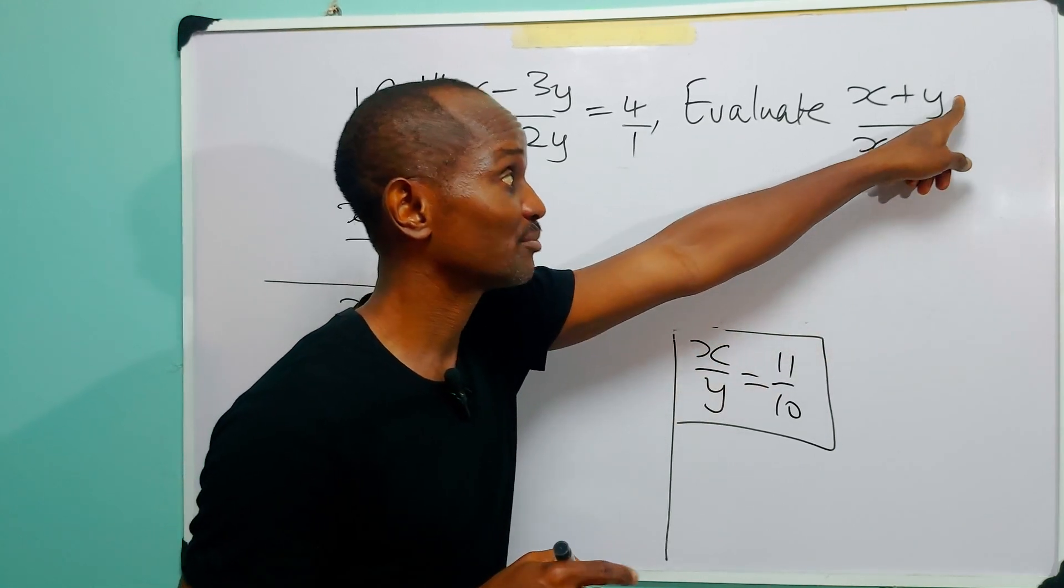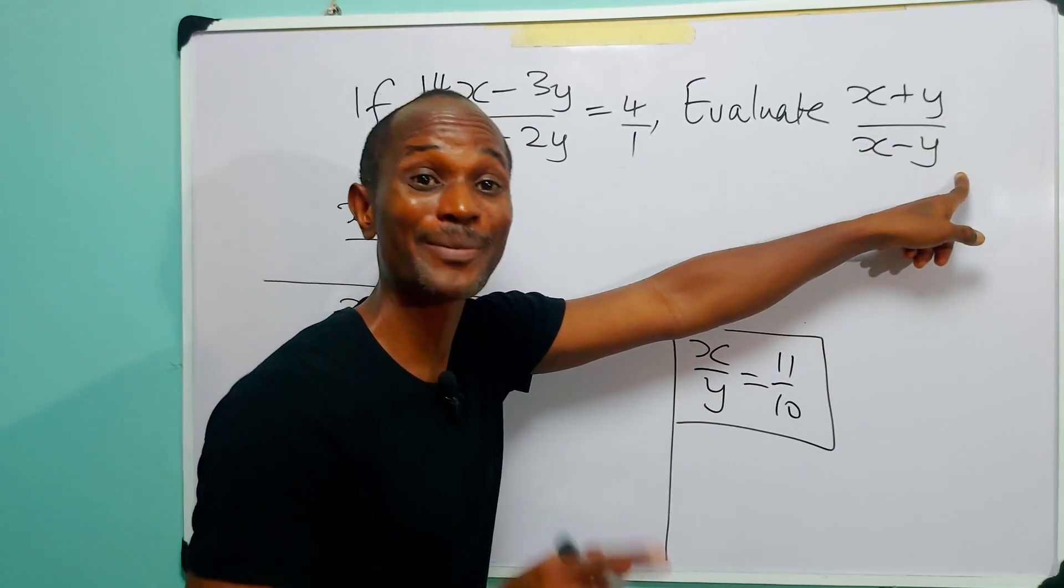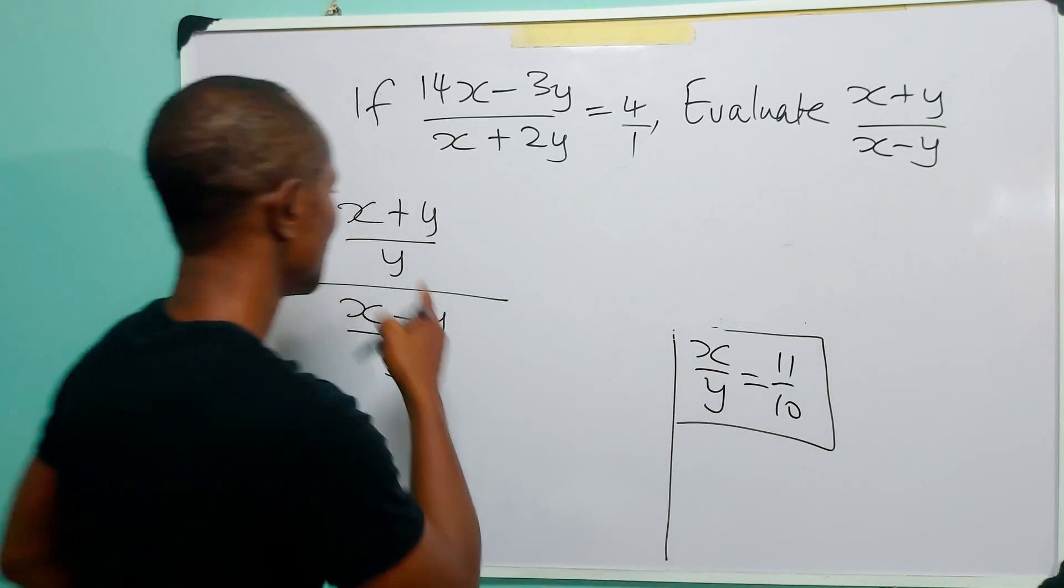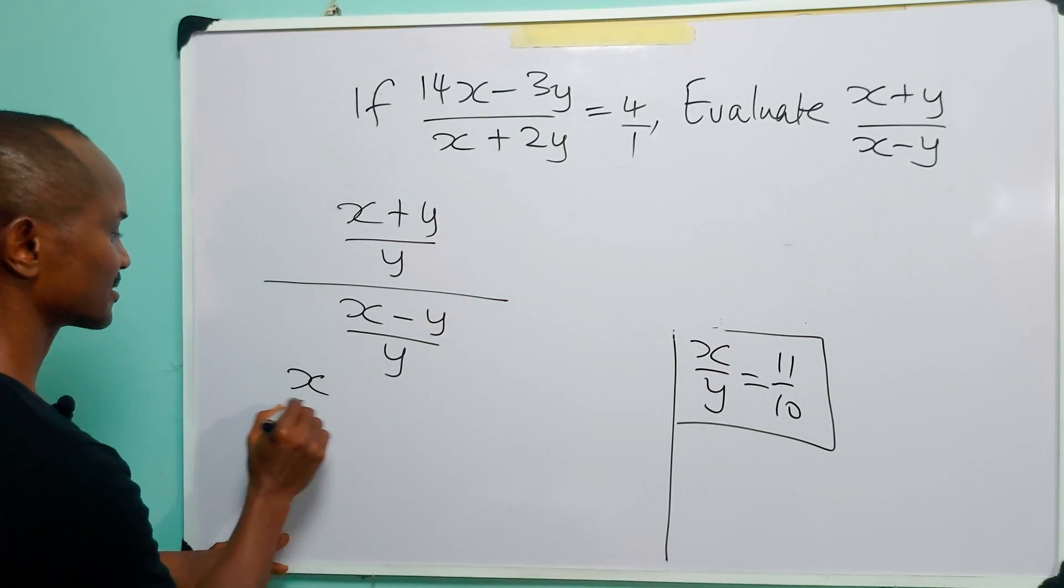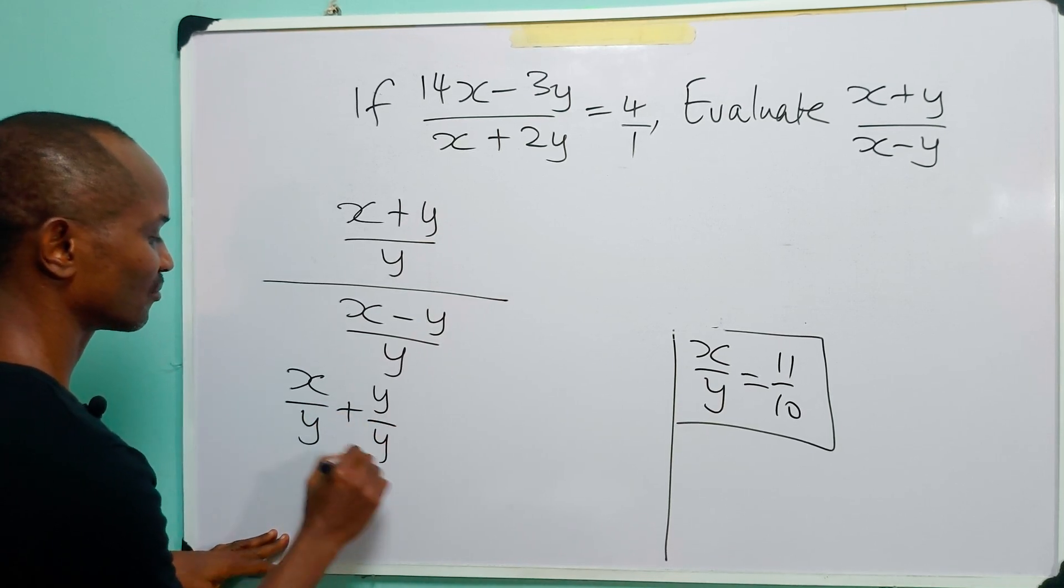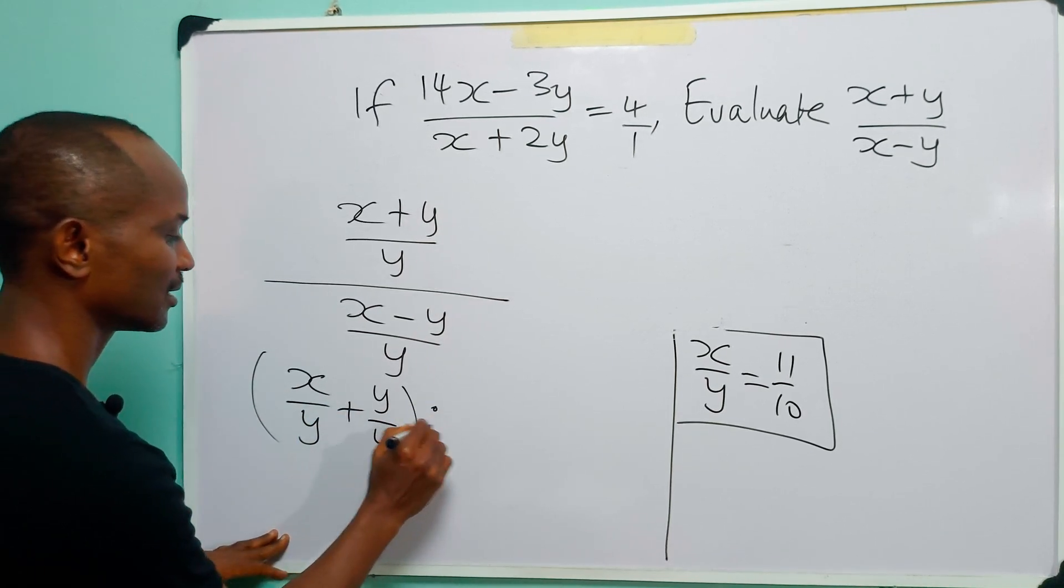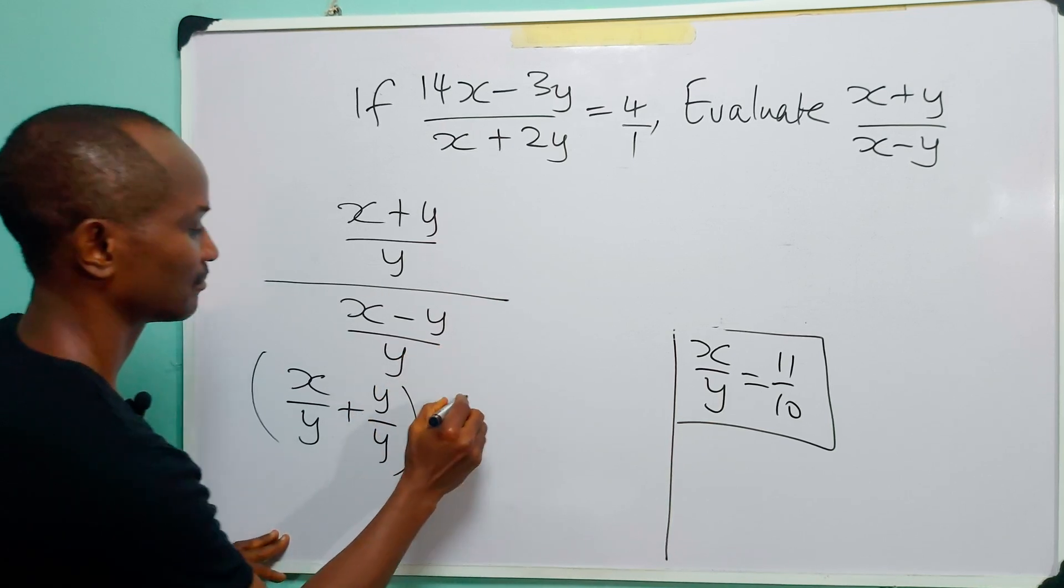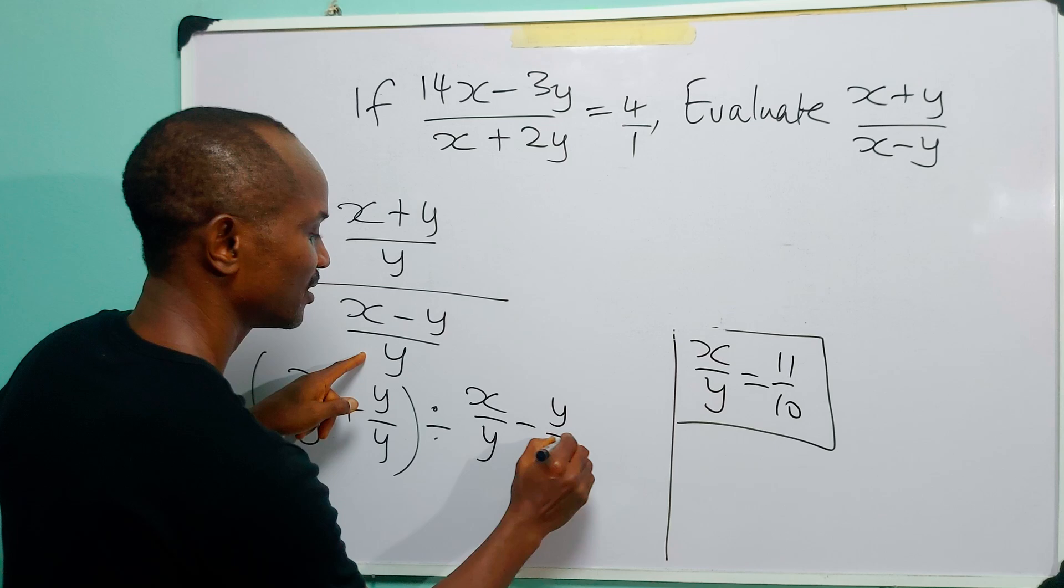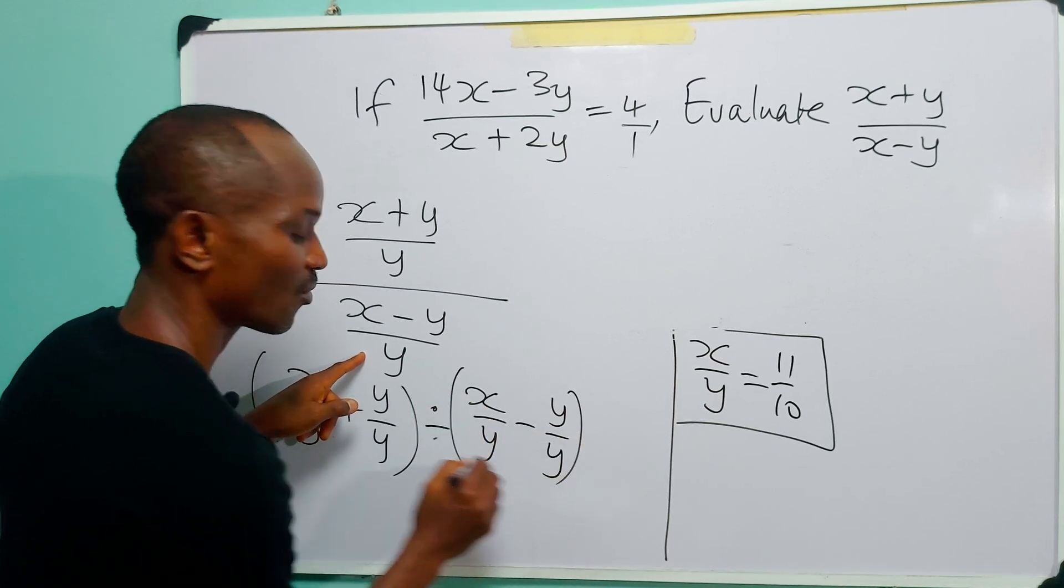Because you know that once you divide both the numerator and the denominator by the same quantity, you have not changed the fraction. So this is simply equal to x/y + y/y divided by x/y - y/y.